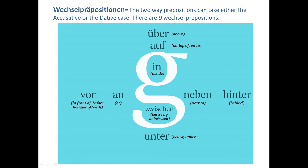Then at the bottom we have 'unter,' which means below or under. In the middle section you can see 'in,' which means inside — as you can see, it is inside an object. Then we have 'zwischen,' which means between or in between, positioned between two curves.